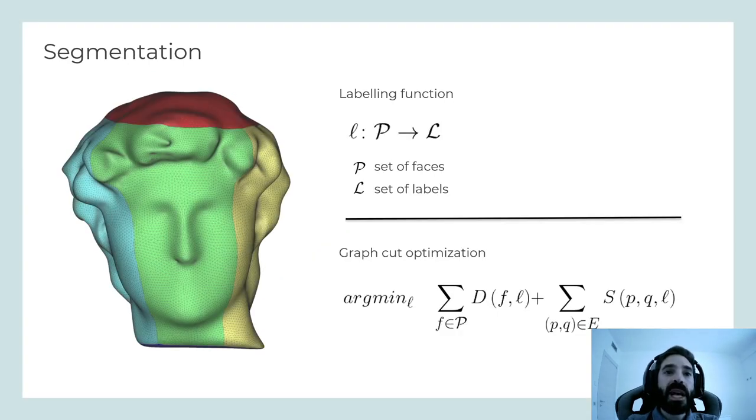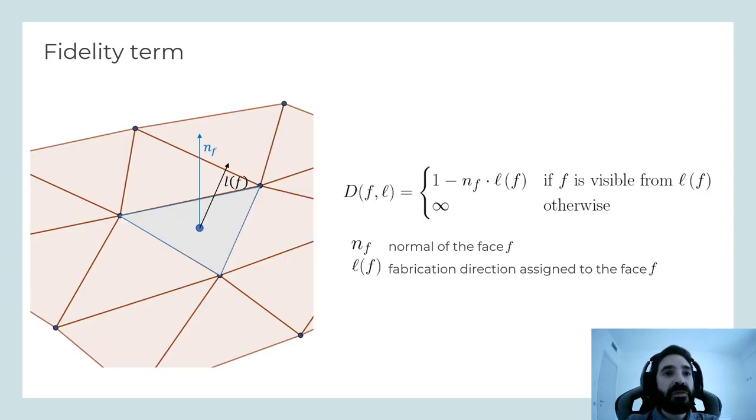Then, the optimal axis is determined by summing a measure of fabrication accuracy for each region, comparing the triangle normal with its possible fabrication direction using the given axis. Then, we derive the decomposition for the side region. In particular, we sample a set of uniformly generated fabrication directions orthogonal to the rotation axis.